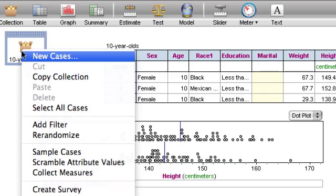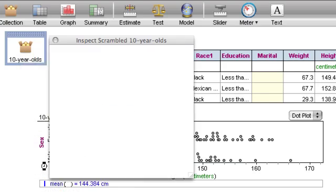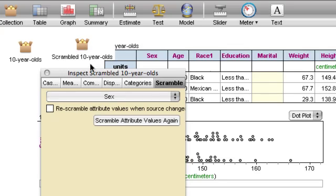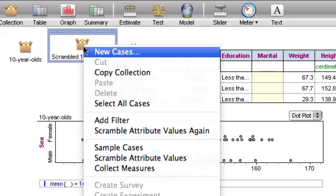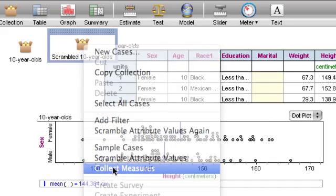Now I'm going to scramble, not sample. I do scramble attribute values. If I look under here, I can see this is the scramble 10-year-old collection. I've already scrambled by sex, which is correct. And so I could look at that, but I'm just going to go directly onto the measures. I'm going to do collect measures.